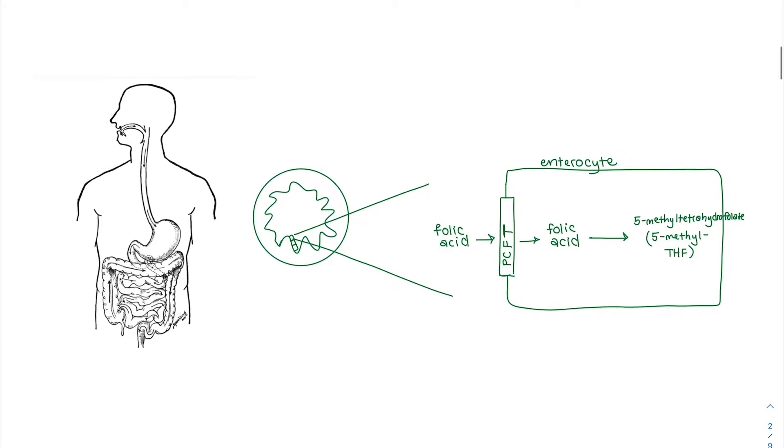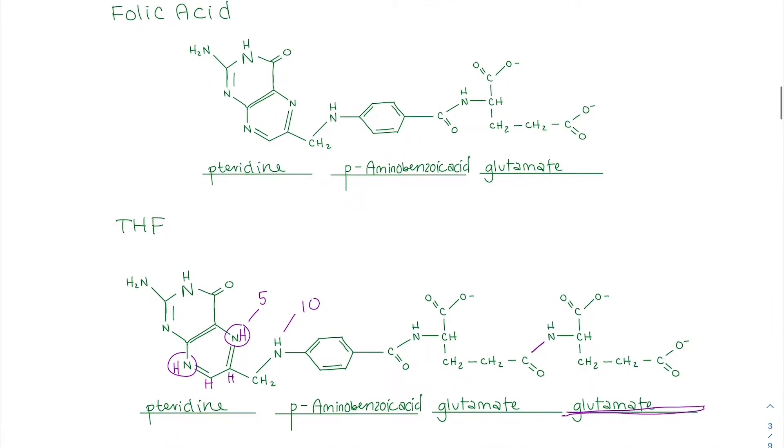Talking about absorption, folate is in a polyglutamated form. This is the structure I want to talk about. It might help to see this is folic acid, it only has one glutamate, and then this is THF, which is the cofactor form for folate. It has an extra glutamate and some extra hydrogens.